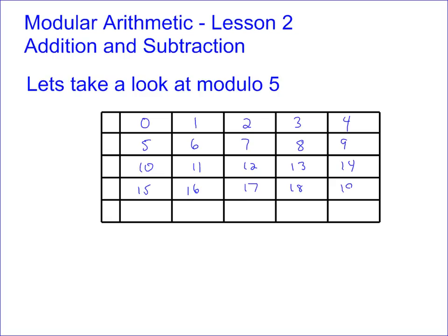So the question is, what happens to the residue when you add two numbers together? For instance, if I add seven and eight together, well seven plus eight is fifteen, so my answer is zero mod five. Seven is two mod five, eight is three mod five, and so two plus three equals five.